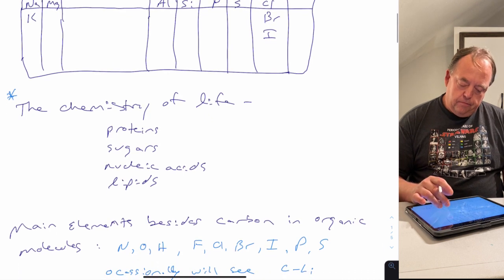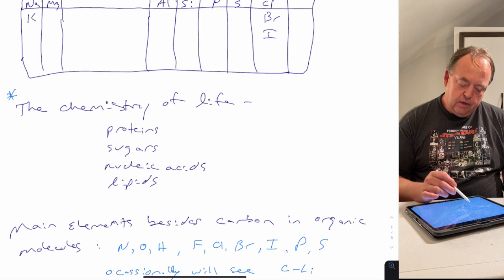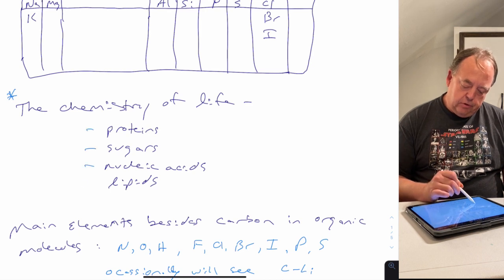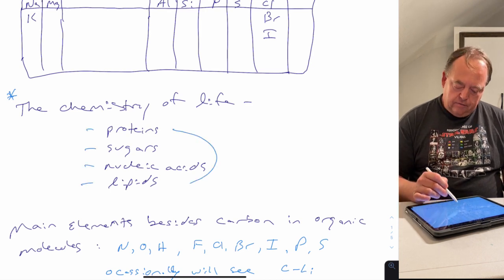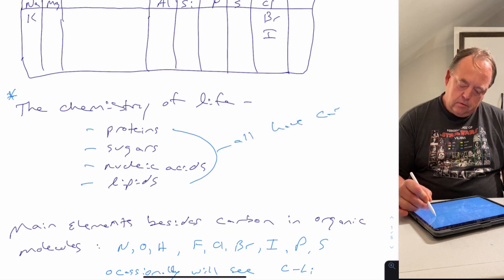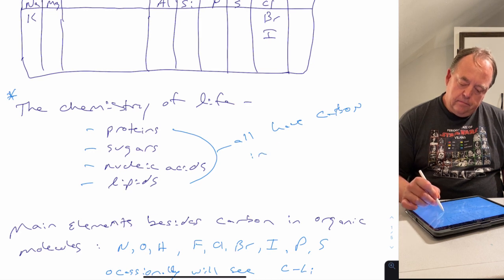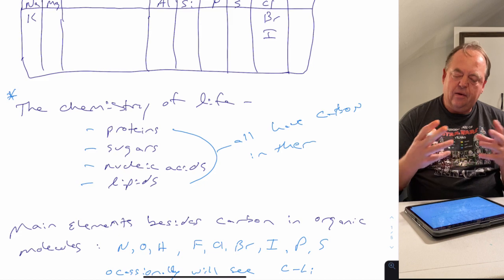Organic chemistry is also called the chemistry of life. Why is it called the chemistry of life? The main biomolecules in biological chemistry — proteins, sugars, nucleic acids, lipids — all of them have carbon in them. All of these molecules are based on a carbon network framework.